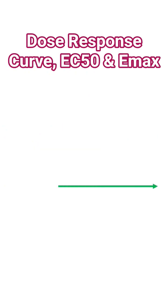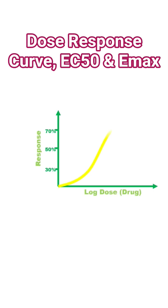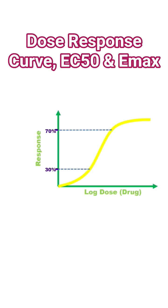The curve transforms into a sigmoid shape when the dose is plotted on a logarithmic scale. In the intermediate response range, i.e. 30-70% of the maximum effect, a linear relationship emerges between the log of the dose and the response.